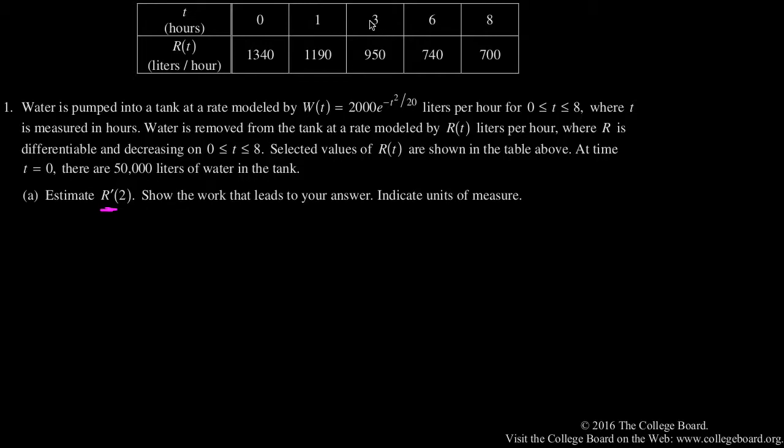And the closest t values to 2 that sort of go around to are 1 and 3. So to estimate this, r prime of 2, the instantaneous slope, will be approximately the average slope from 1 to 3, which is going to be r of 3 minus r of 1, divided by 3 minus 1.